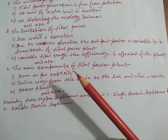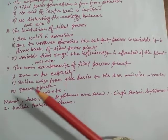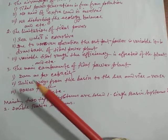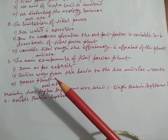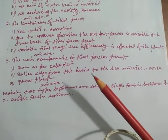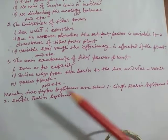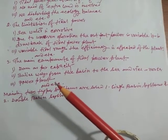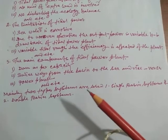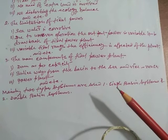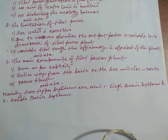Number three: the main equipment of tidal power plant. Number one: dam as per capacity. Number two: sluice ways from the basin to the sea and vice versa. Number three: power plant, etc. Mainly two types of systems are used: number one, single basin system, and number two, double basin system.